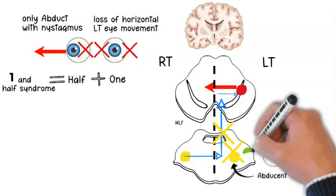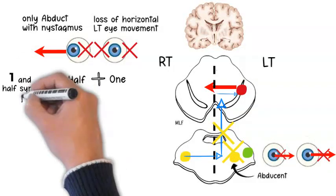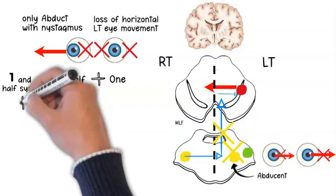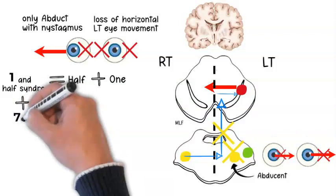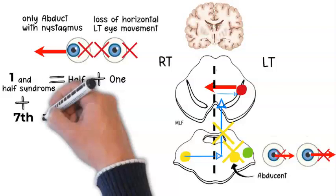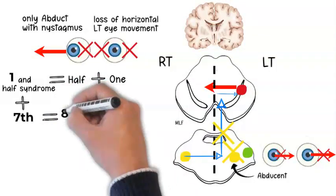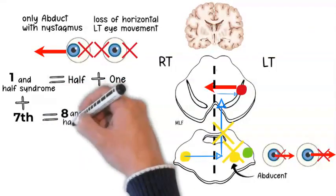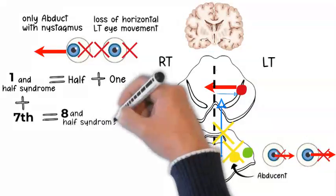Now imagine that the lesion will extend to involve the facial nucleus as well, since the facial nucleus lies adjacent to the abducent nucleus. When we add the seventh cranial nerve palsy to the one and a half syndrome, this will produce eight and a half syndrome.